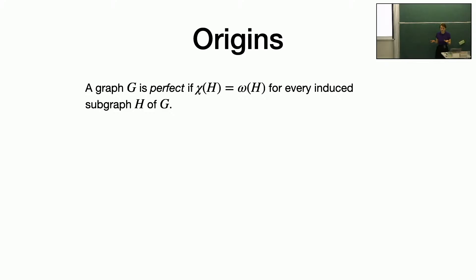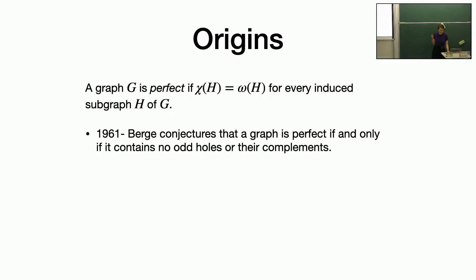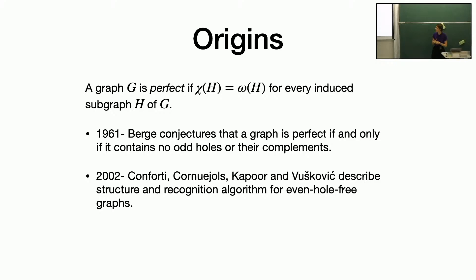So the history: basically all this field started with perfect graphs, which are graphs where the chromatic number and the clique number are equal for that graph and also every induced subgraph of that graph. This notion was introduced by Berge in the 60s. He conjectured that a graph is going to be perfect if and only if it doesn't contain an odd induced cycle or the complement of an odd induced cycle. This became a really well-known conjecture called the strong perfect graph conjecture, and it was a huge area of study for 40 years. During this time, people got interested in looking at how holes in a graph affect its overall structure as a means to trying to prove the strong perfect graph theorem. The first result of this kind was from 2002.